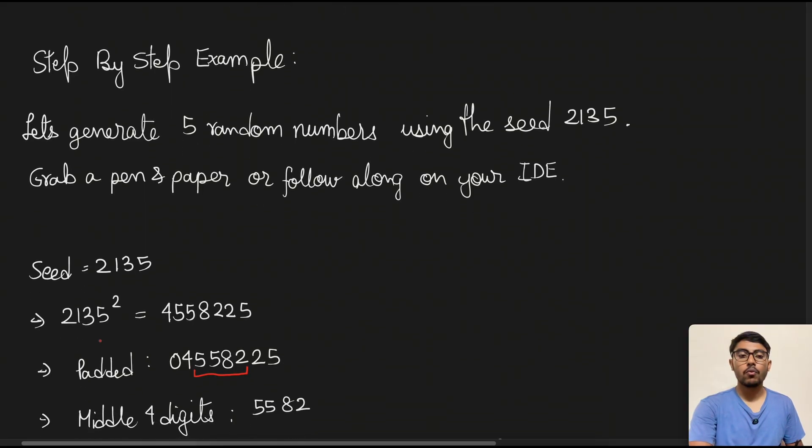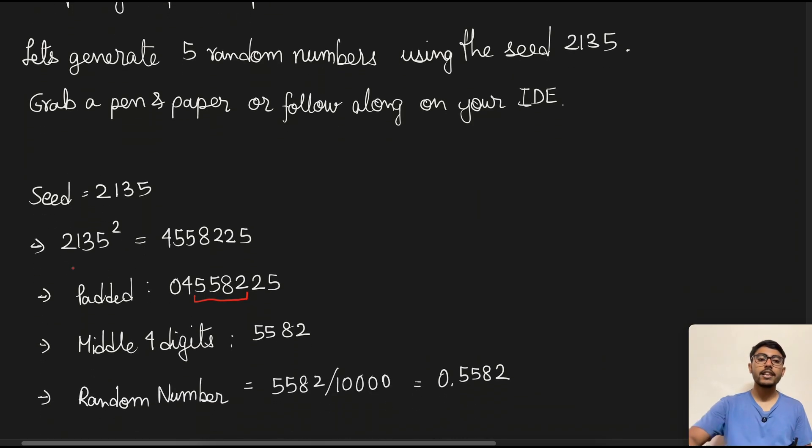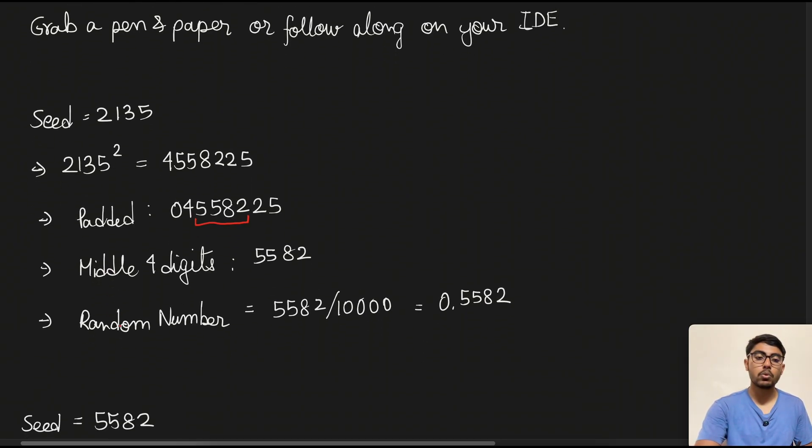So we pad it, then we find the middle four digits which is 5582, which is the middle four digits. Then we go to generating the random number, so 5582 by 10,000. Why 10,000? Because then we would be getting it between 0 and 1. So we do that, once we've done that, we have this new random number to us.